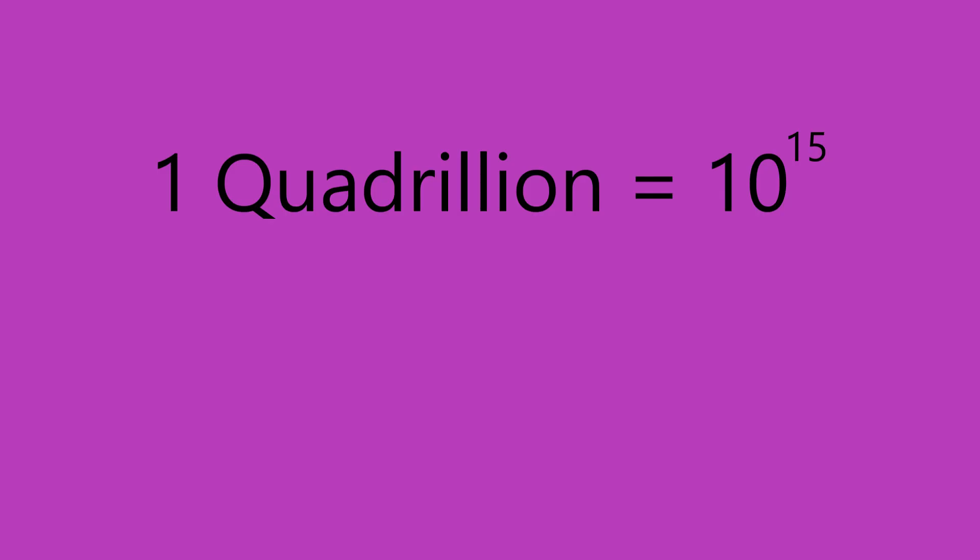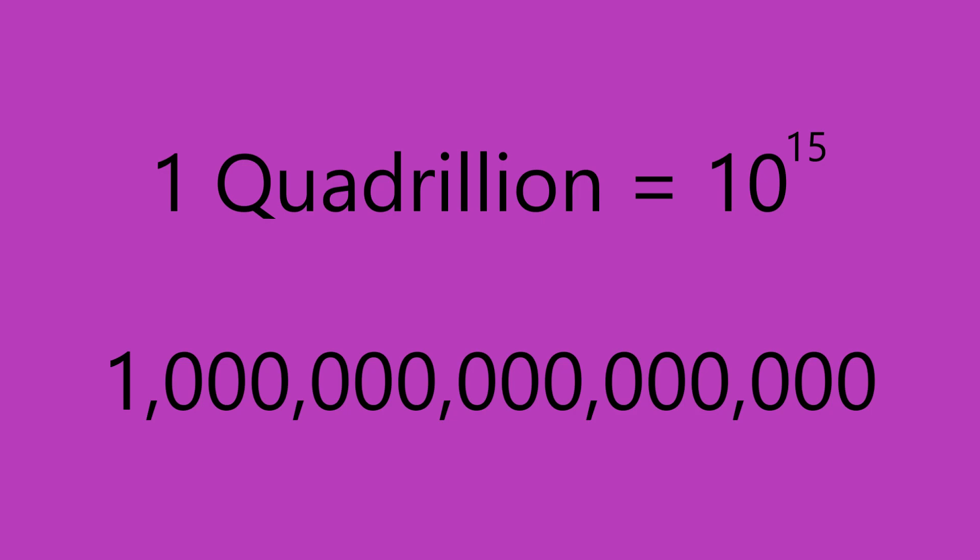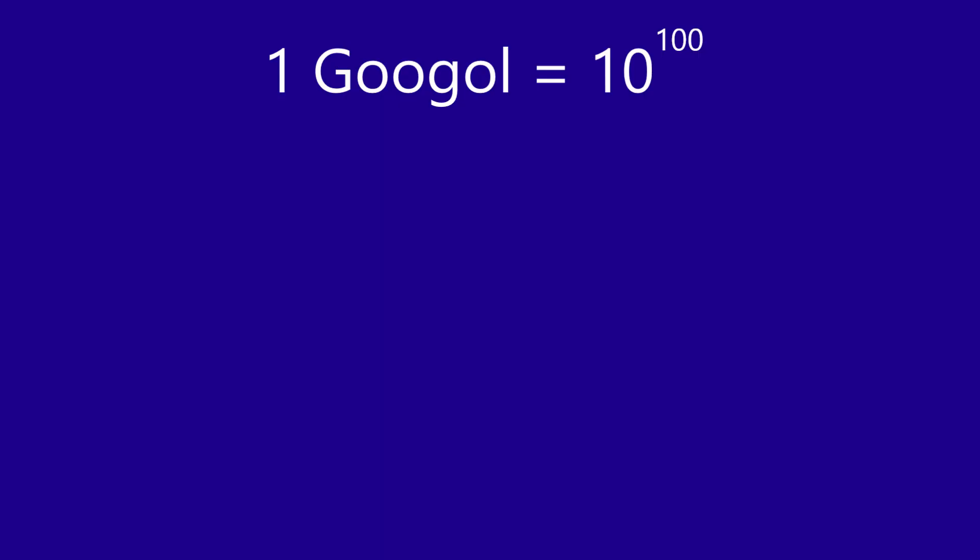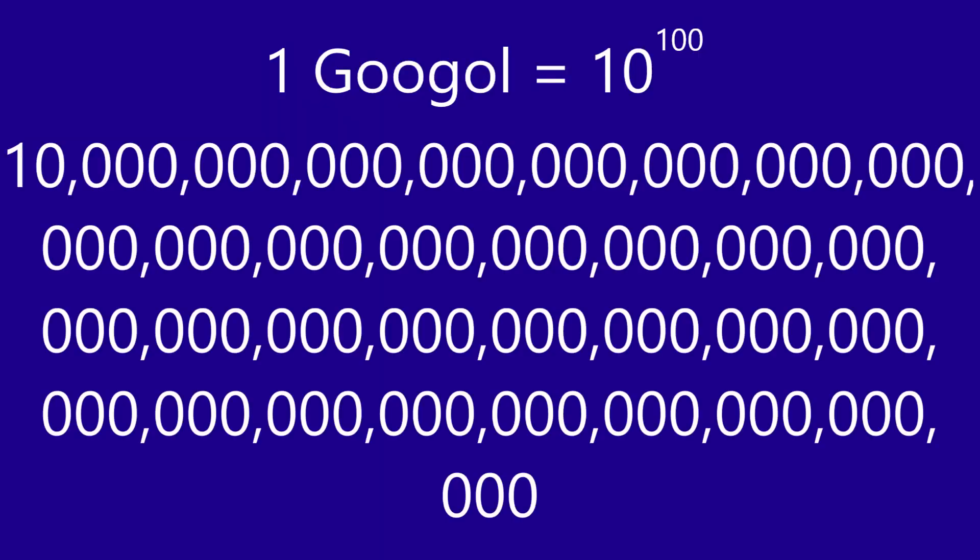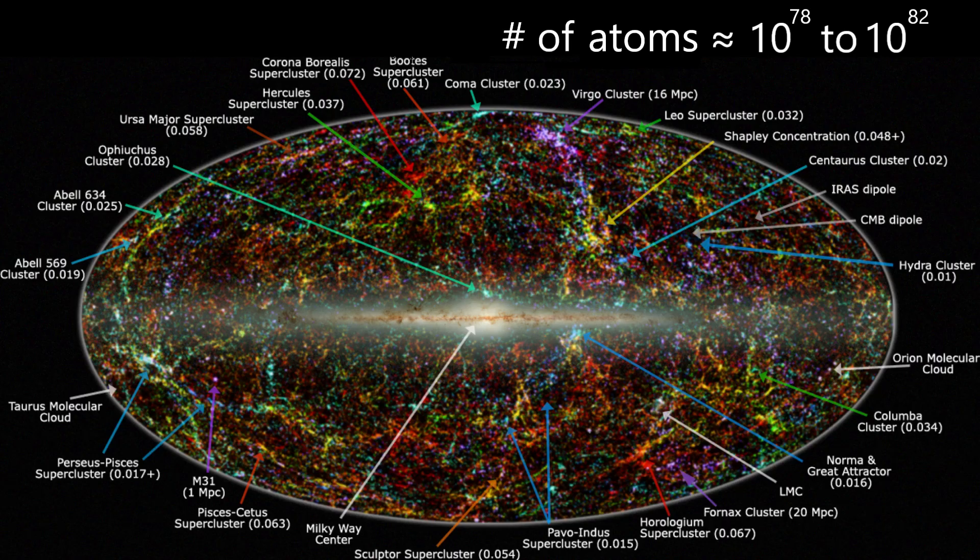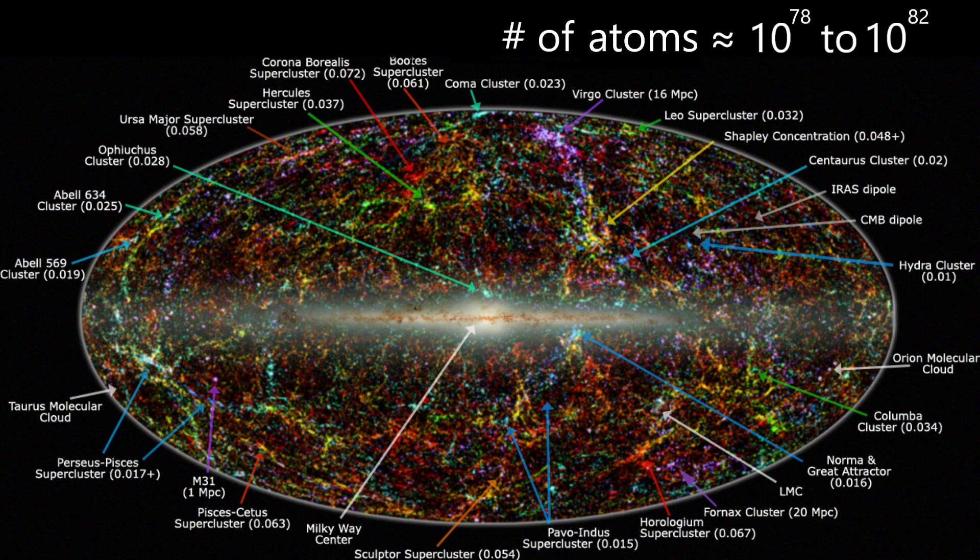But all those numbers are just a drop in the bucket compared to the number googol. The biggest number we mentioned so far was in the quadrillions. One quadrillion is 10 to the 15th power, or one with 15 zeros after it. A googol is 10 to the 100th power, or a one with 100 zeros after it. This number is larger than the number of atoms in the observable universe, which is estimated to be between 10 to the 78th power and 10 to the 82nd power.